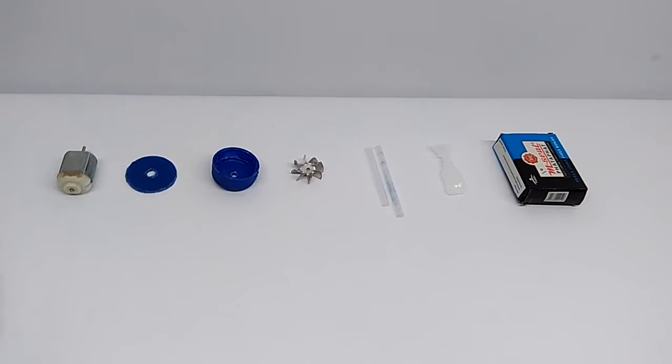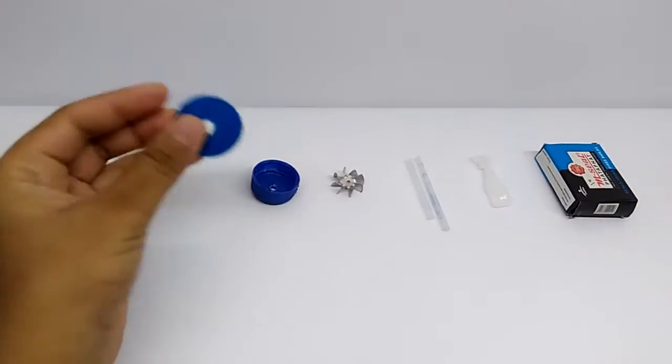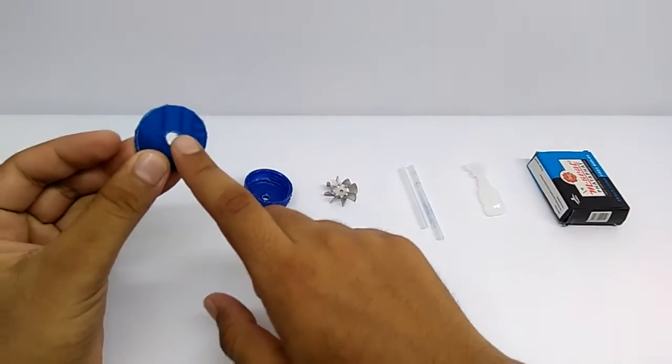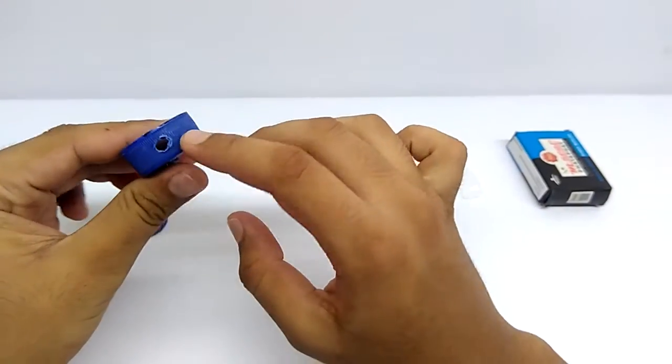To make this water pump we will require the following things: a DC motor, a plastic sheet with a hole drilled in the center, and a bottle cap with two holes drilled like this.